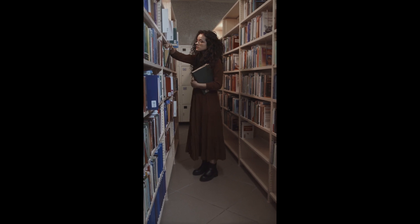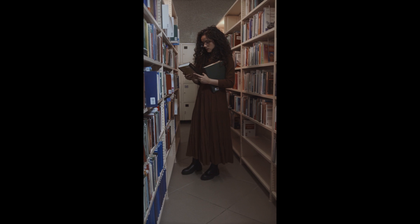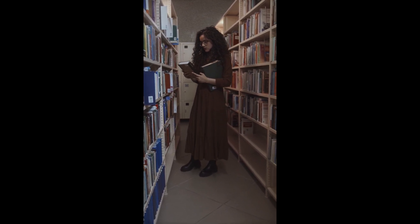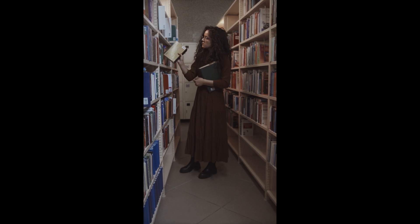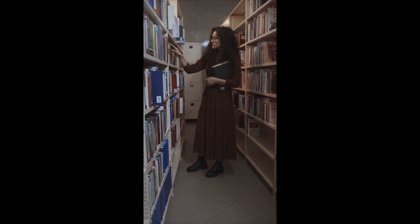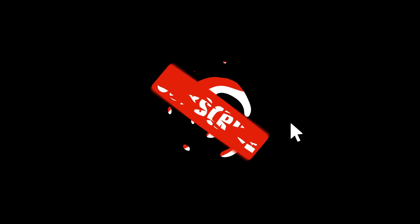The educational policymaking process is generally divided into several stages. Stage 1: Identifying the Issue. The first step in the policymaking process is recognizing a need for change. This may arise from various sources, including research and assessment — data collected from standardized tests, assessments, and surveys can highlight gaps in educational outcomes.